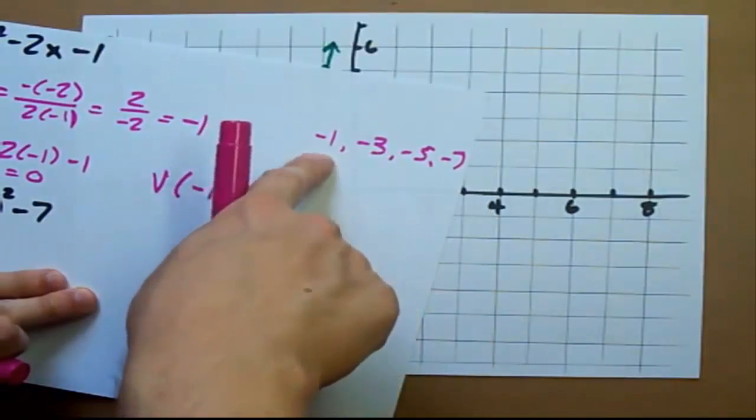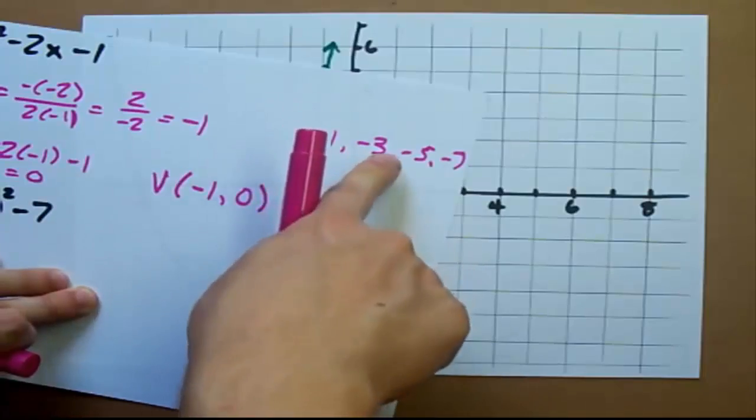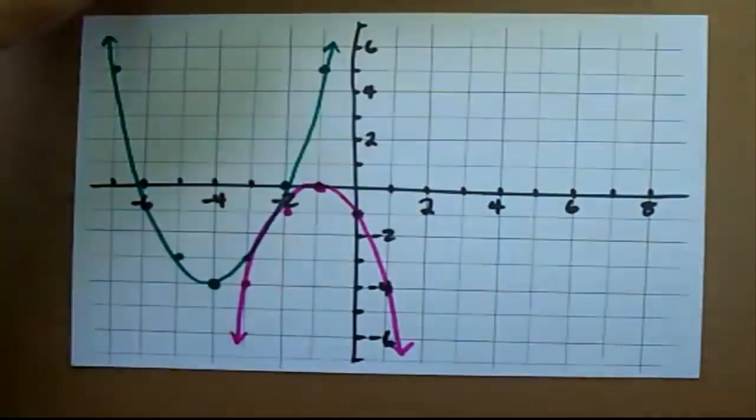And it goes over 1, down 1, over 1, down 3, over 1, down 5, and on.